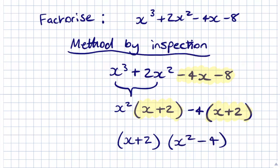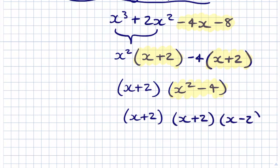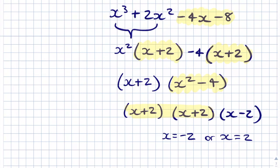Again we have a difference of two squares, so we can factorise x² - 4 to get (x + 2)(x - 2). So the full factorised form is (x + 2)(x + 2)(x - 2). Solving this, we have two solutions: x = -2 or x = 2. But because we have two factors of (x + 2), x = -2 is known as a repeated root.